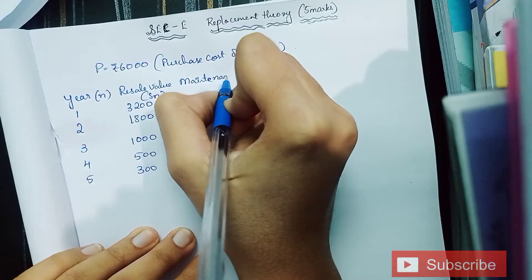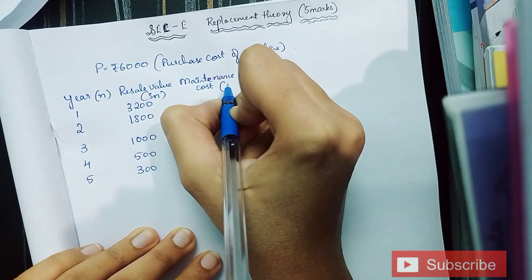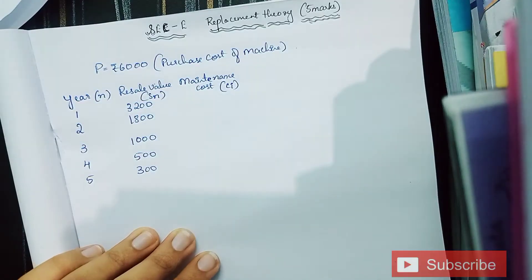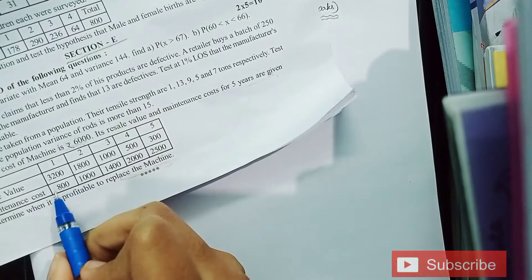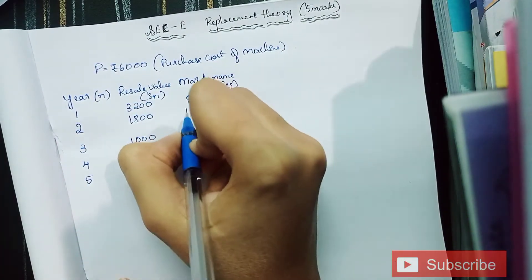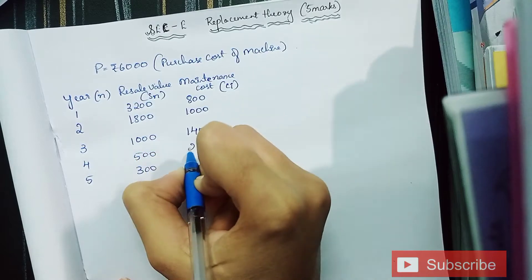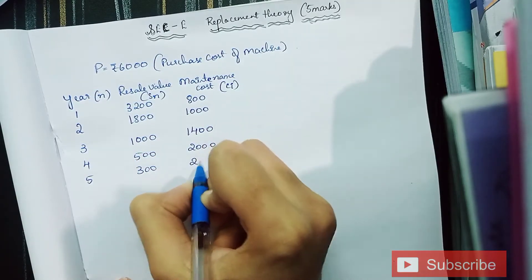Next column is the maintenance cost, denoted by CI. So the values are 800, 1000, 1400, 2000, and 2500.